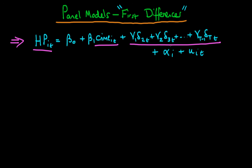These are the various factors which are the same across different cities in the US but vary over time — representing overall trends in house prices across time. As well as these time-dependent terms, there was also dependence on that particular city which doesn't vary across time, which I'm calling alpha i, as well as some idiosyncratic error.